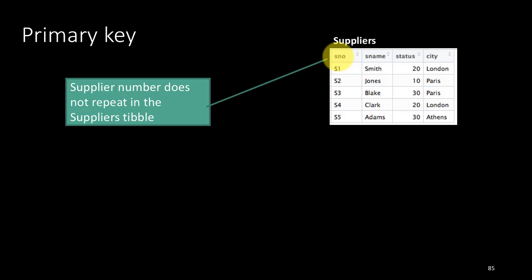This is like with the IRS — they have our social security number. No two individuals are supposed to have the same social security number. In that sense our social security number uniquely identifies the individual. Similarly, the supplier number uniquely identifies the supplier, or in the context of our university, we have an ID that uniquely identifies each student. No two students will ever have the same ID unless somebody makes a mistake. This kind of column is called a primary key.